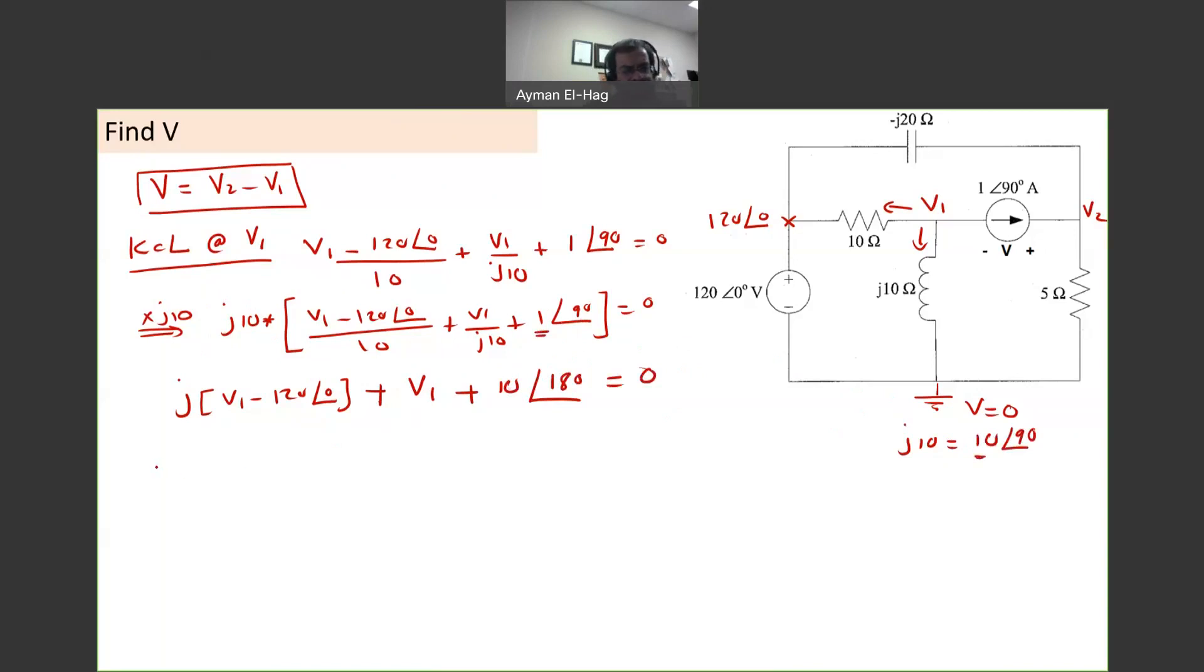So I will take V1 as a common factor, so I will have 1 plus J minus, now what is J? J basically is 1 angle of 90, so J times 120 angle of zero, so this is minus 120 angle of 90, plus 10 angle of 180, equal to zero.